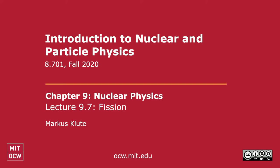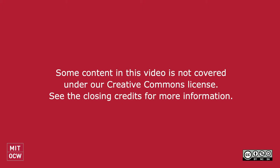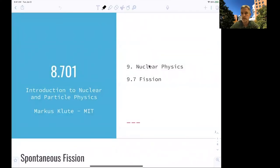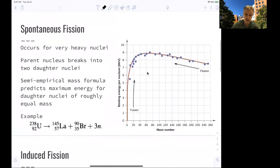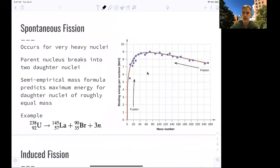Welcome back to 8.701. So in this lecture, we talk about nuclear fission. We've already seen the process when we discussed the empirical mass formula.